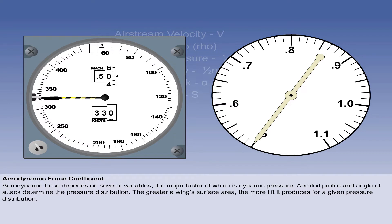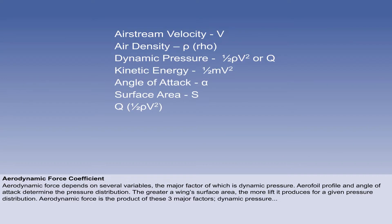Compressibility, which only starts to become significant above 300 knots, will be covered in later lessons. Any aerodynamic force can thus be represented as a product of the three major factors, which are the dynamic pressure of the airflow, half rho V squared, or Q.